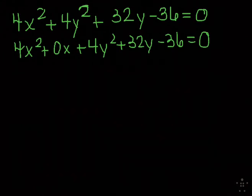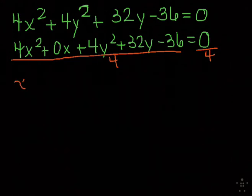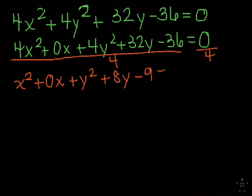If you notice, this time we have leading coefficient 4. But just like we can always do with any equation, all these numbers are divisible by 4, so I can go through and divide both sides of the equation by 4. 4 divided by 4 is just x², 0 divided by anything is still 0, 4 divided by 4 is just y², 32 divided by 4 is 8y, and then minus 9. Once again, 0 divided by anything is 0.